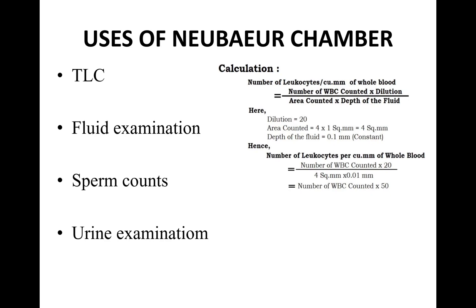This can also be done for fluid examination — for example, in TB patients presenting with pleural effusion, we want to see if lymphocyte count is high, or if there are malignant or atypical cells. For fluid examination, four vials are sent: vial one for biochemistry, vial two for microbiological examination, vial three for cell cytology counted on the Neubauer chamber, and vial four for additional molecular or genetic studies. You can also count sperm counts and do urine examination on the Neubauer chamber.